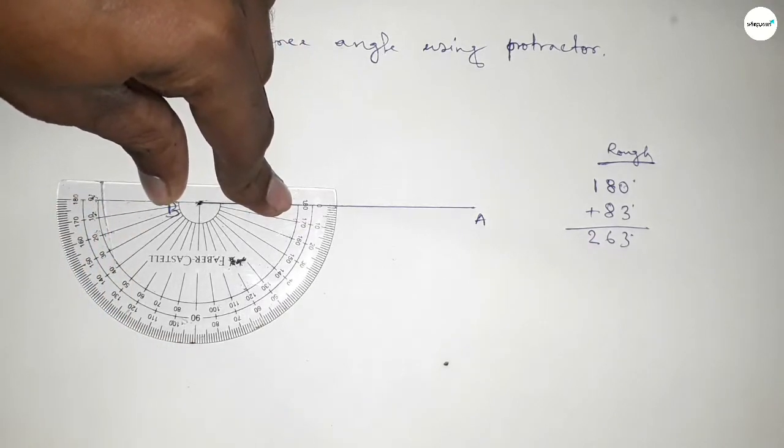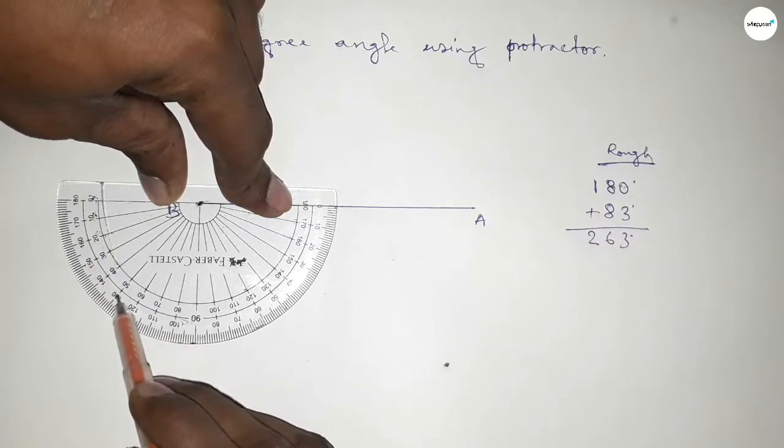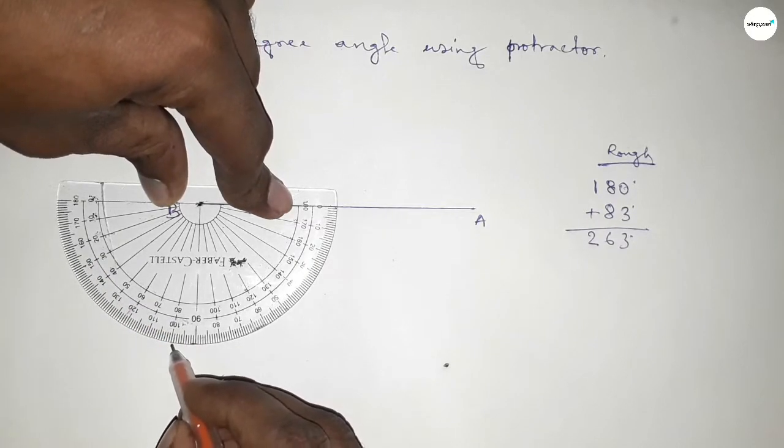Now counting 83 degrees: this is 0, 10, 20, 30, 40, 50, 60, 70, 80, 81, 82, 83. So this is 83-degree angle.